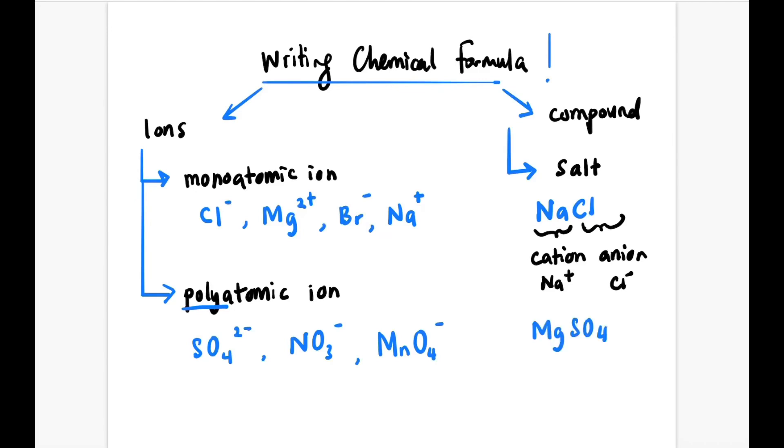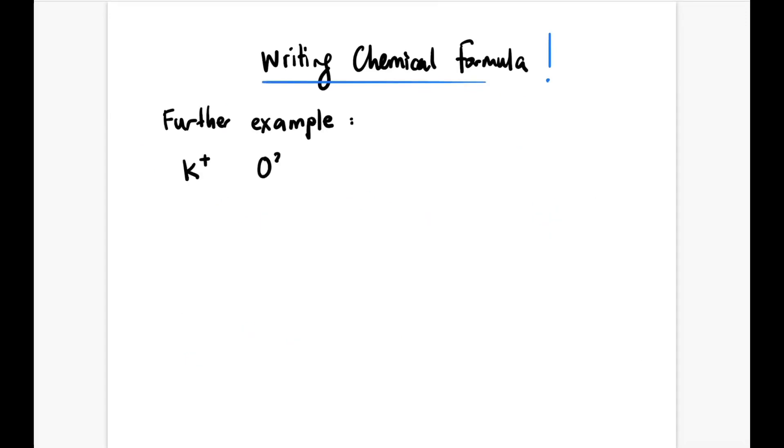Let's look at a further example. What if K+ combines with O²-? We write K, then the charge of O²- we put below K as 2, then oxygen gets 1, giving K2O. This is called cross multiplication.